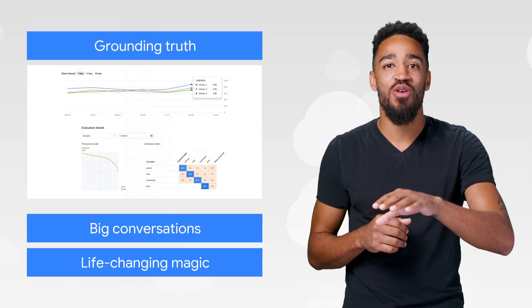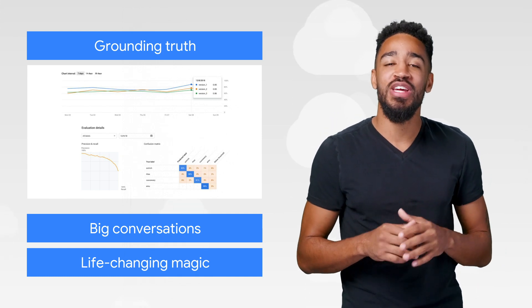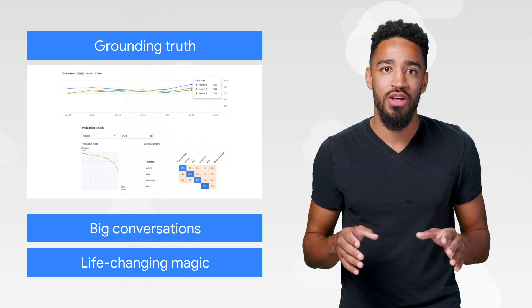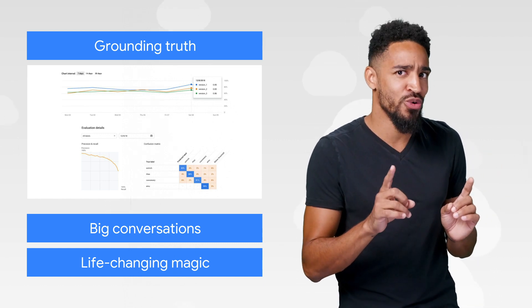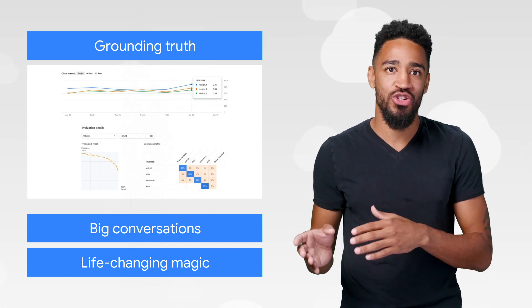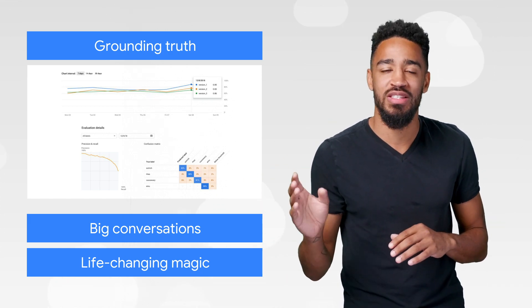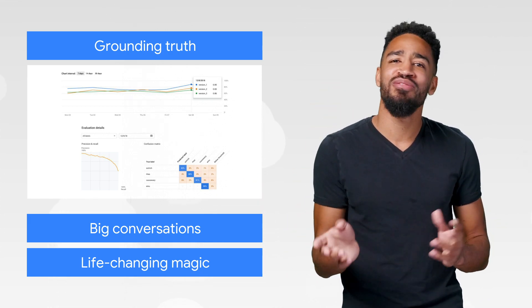If you're already using AI Platform Prediction to run ML models, you can now take advantage of continuous evaluation to keep those models in top form. We'll assign real human reviewers to compare samples from your models to ground truth tables, giving you a clear picture of how your model is performing across time. It's all in the tutorial. Check it out.